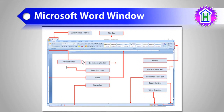Beneath the Command Ribbon, we have the ruler. The ruler is horizontally placed here and vertically placed here — you can follow the mouse to understand. This is the vertical ruler and this is the horizontal ruler. It helps us to set the measurement unit and set measurement inside the document area.